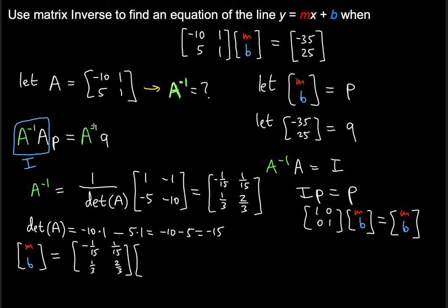P equals m, b. A inverse is here, and then q is negative 35, 25. So we just have to do matrix multiplication, and then we will solve for every single entry. Let's solve for m first. M is going to be the product of the first entry in this matrix with this entry in the second matrix. So negative 1 over 15 times negative 35 plus the second entry, 1 over 15 times 25.